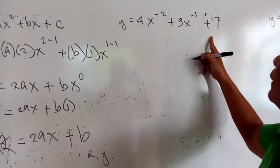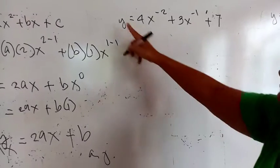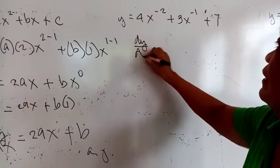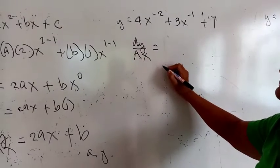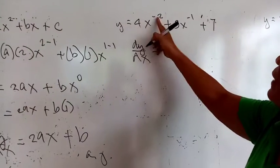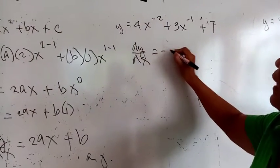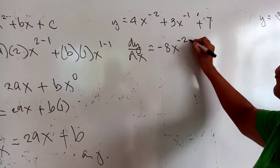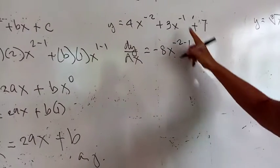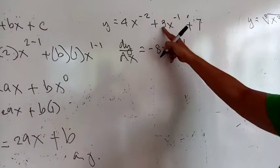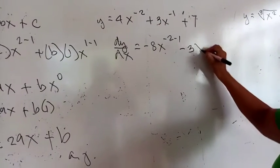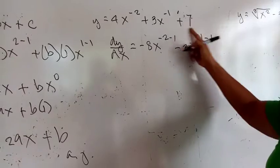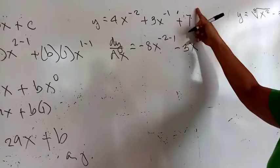For this next example, to take the derivative of y with respect to x: 4 times negative 2 will be negative 8, times x to the power 2 minus 1. Next, negative 1 times 3 will give us negative 3, times x to the power 3 minus 1, which is x squared. The derivative of the constant is 0.